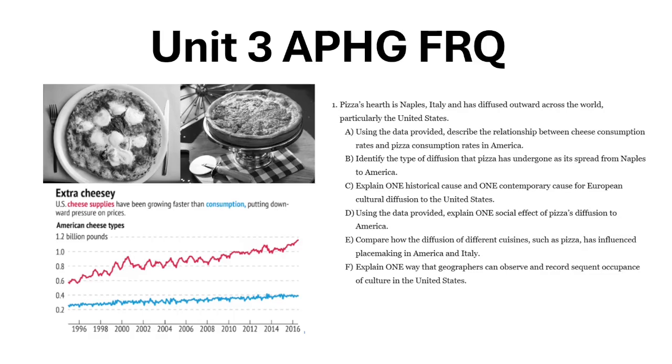Hey everyone, welcome back to another video. Today we're going to be doing a Unit 3 FRQ for AP Human Geography. We're going to be talking about the diffusion of pizza.